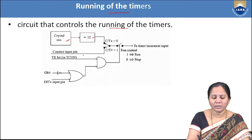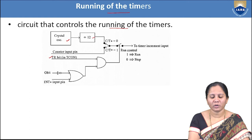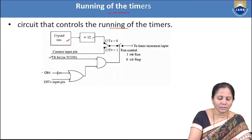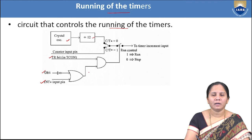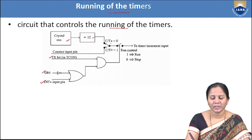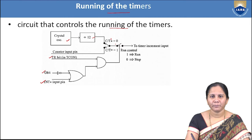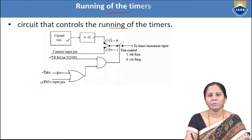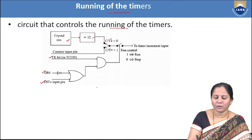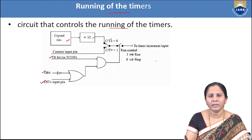The internal circuit includes the TR bit from the TCON register, the gate bit (G), the INT pin, and a switch controlled by the C/T-bar bit. The C/T-bar bit may be 0 or 1 — when it is 1, counter operation is performed; when it is 0 (active low for timer), the timer operates. Based on the AND gate output, the TF bit is set or cleared.